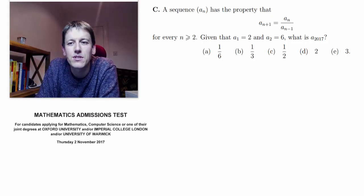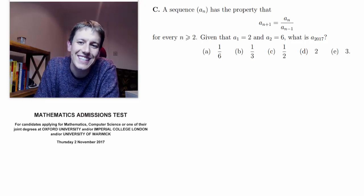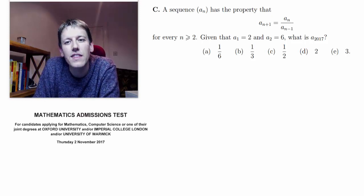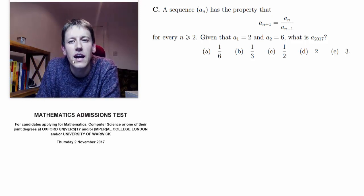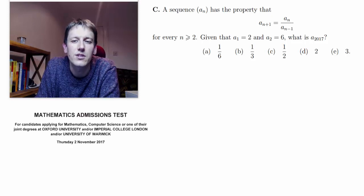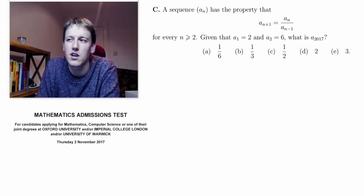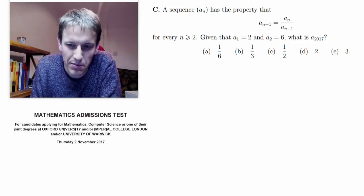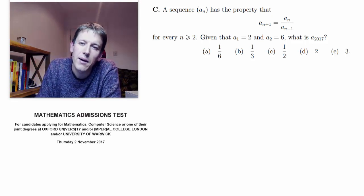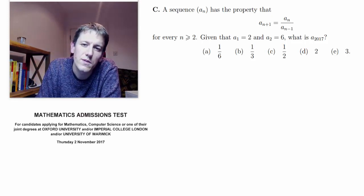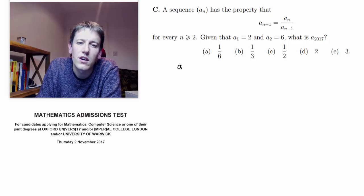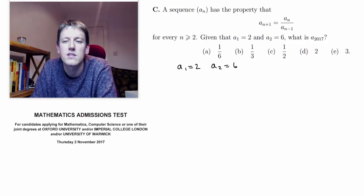We have a sequences question where the sequence follows the iterative definition a(n+1) equals the ratio of the two previous terms, so a(n) divided by a(n-1). Because the two previous terms are in this definition, we're given the two starting terms: a1 equals 2 and a2 equals 6, and we're looking for a2017.